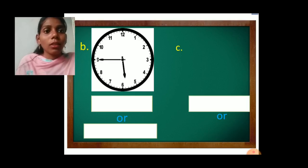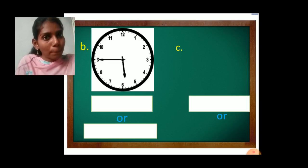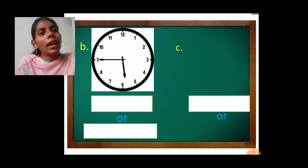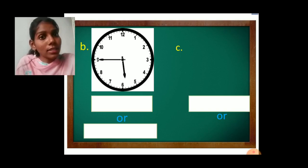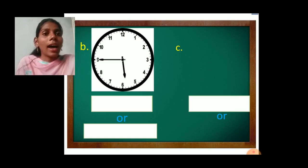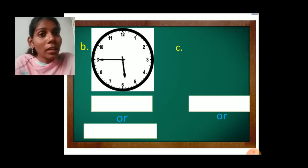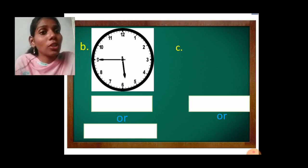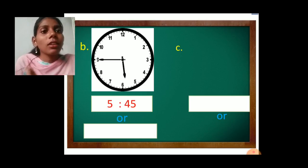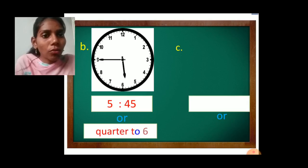See here. In this clock, the minute hand is at number 9 — it means 45 minutes, which means quarter to. The hour hand has crossed number 5 and it is about to reach number 6. So in hours and minutes format we write 5 hours 45 minutes. And in quarter to format, we write quarter to 6, because the hour hand is about to reach number 6.